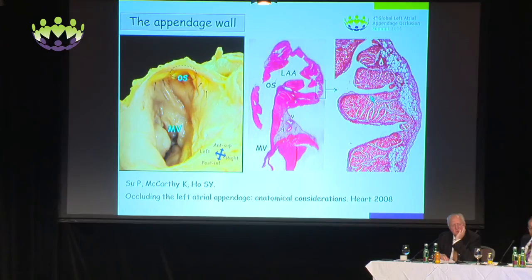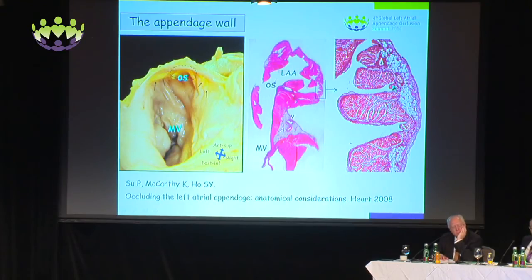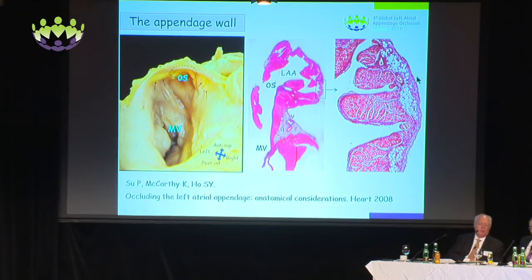The appendage wall itself is composed of pectinate muscles, of course, and in between the pectinate muscles it can be incredibly thin — hardly any tissue between endocardium and epicardium at all.